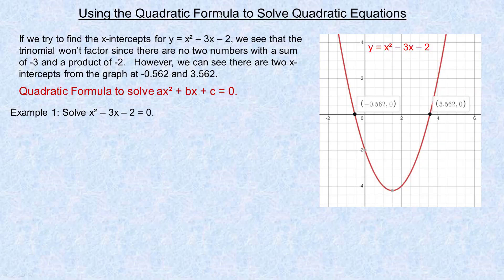In this tutorial we're going to take a look at how to use the quadratic formula to solve quadratic equations. I'm going to start with an application — a place where you might need to use the quadratic formula. So let's say you had this parabola and you wanted to find the x-intercepts. It's a graph of y equals x squared minus 3x minus 2. We find the x-intercepts by setting y equal to 0 and solving for x.